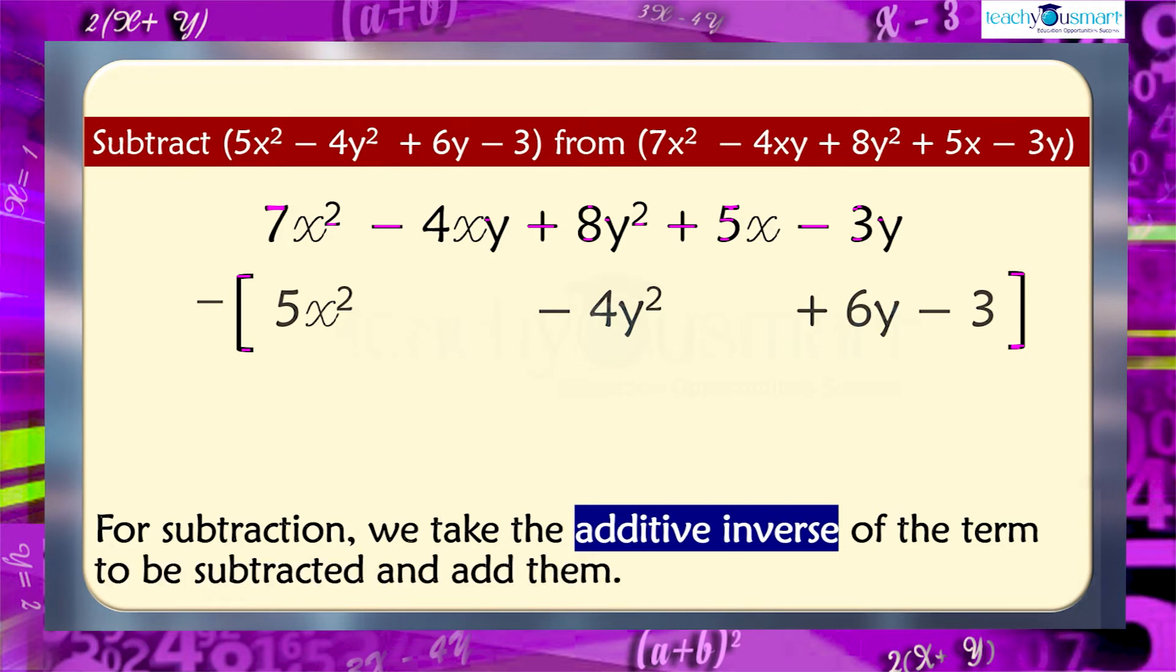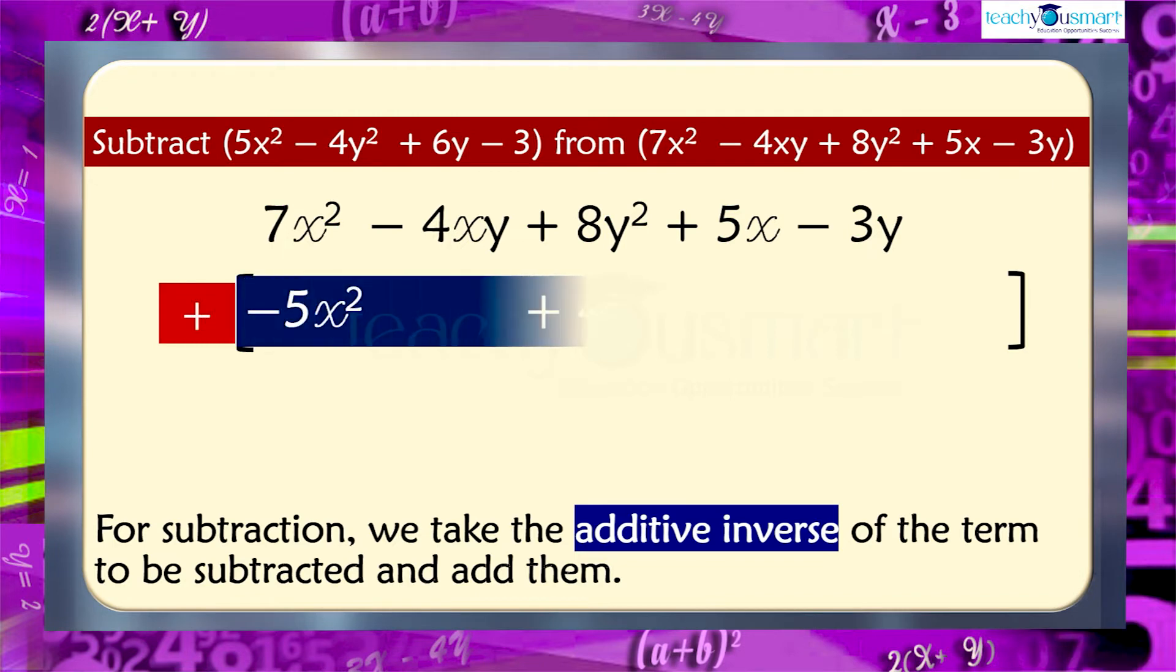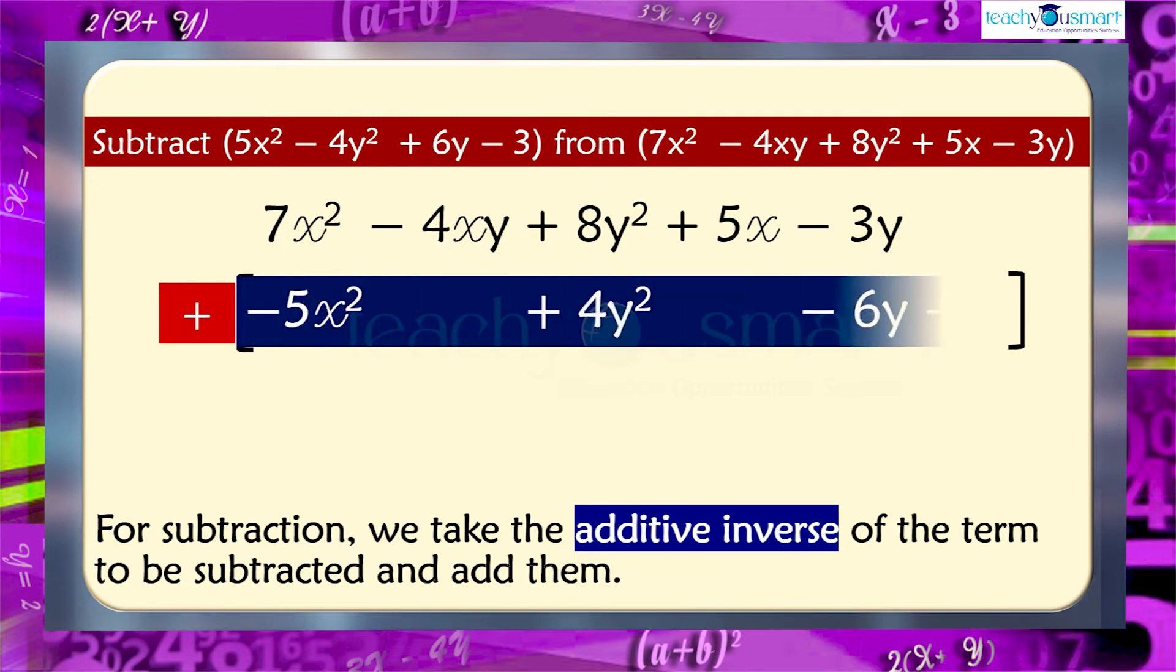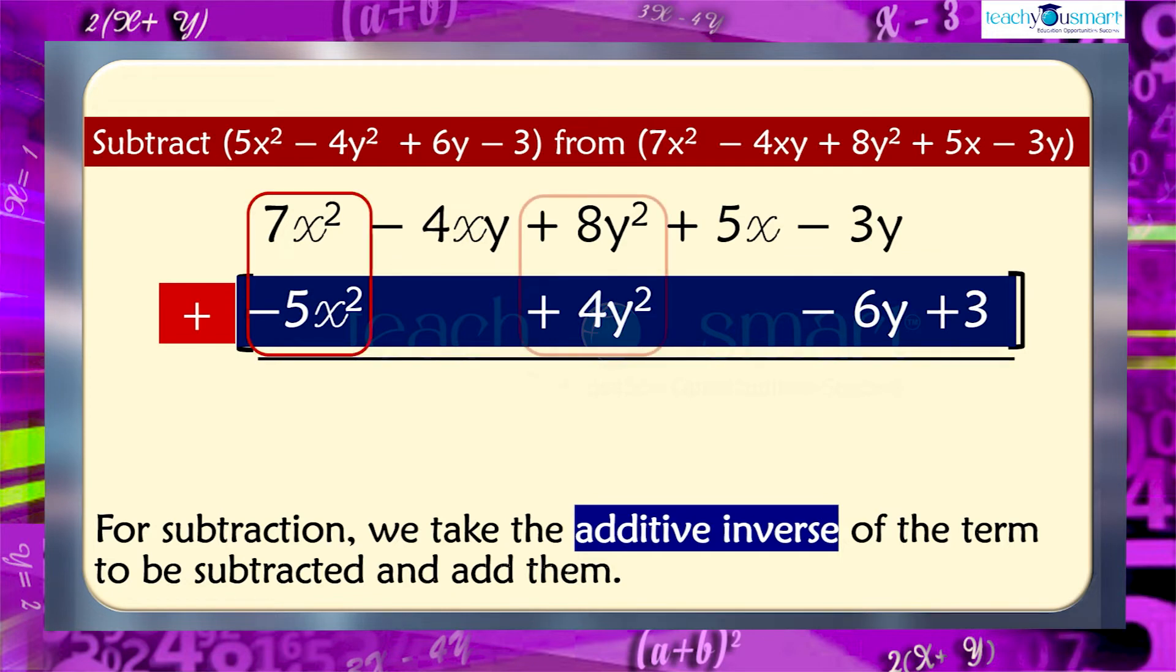That is, 7x square minus 4xy plus 8y square plus 5x minus 3y plus minus 5x square plus 4y square minus 6y plus 3. Plus 3 is a constant term. So, 0 plus 3 equals 3.